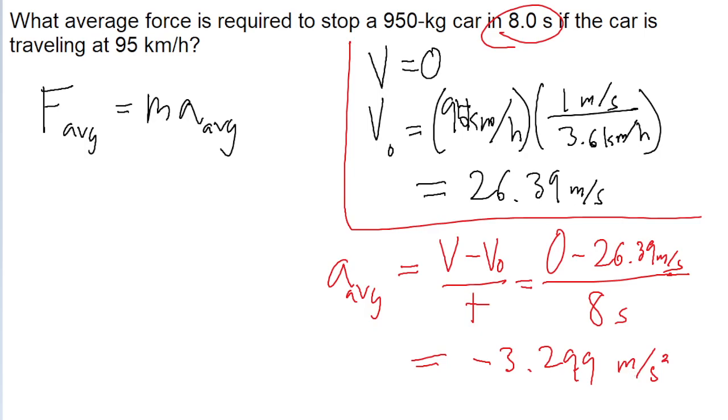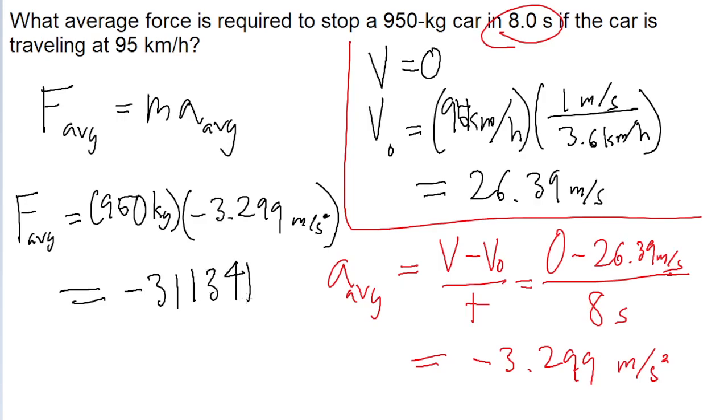So all we've got to do to solve this problem is plug this into acceleration for our force equation. It's mass times acceleration. So 950 kilograms for the mass times negative 3.299 meters per second squared for the acceleration. Put that into a calculator, and we find an average force of about negative 3,134 newtons, or approximately negative 3,100 newtons.